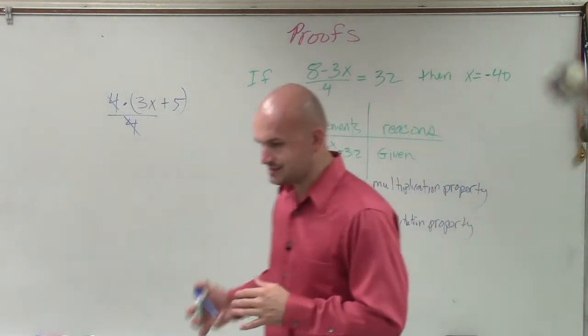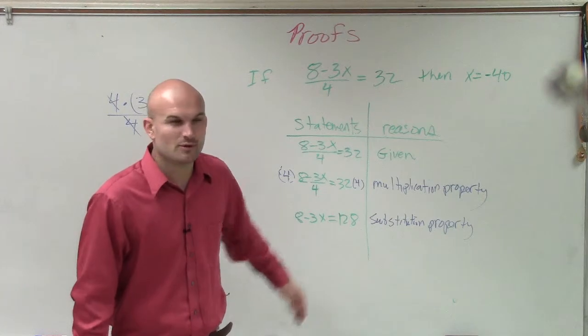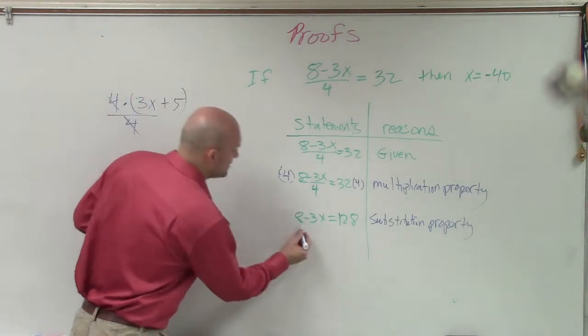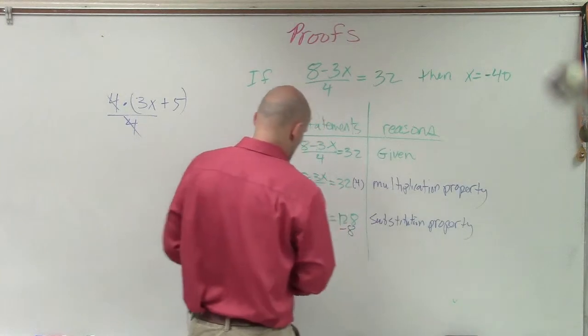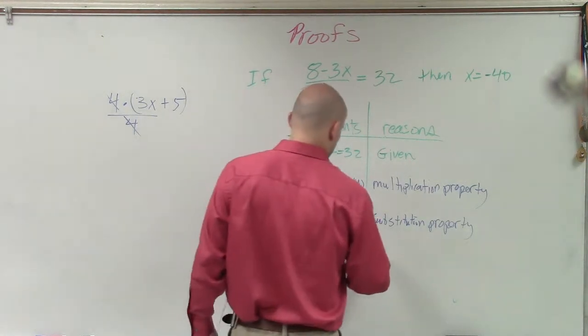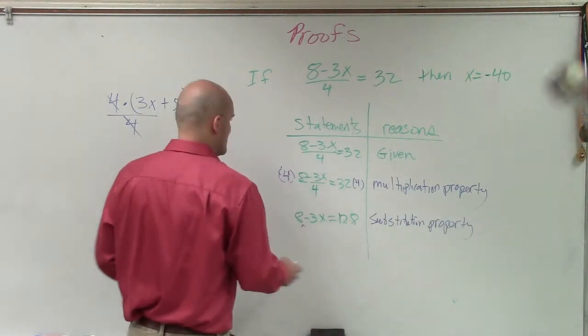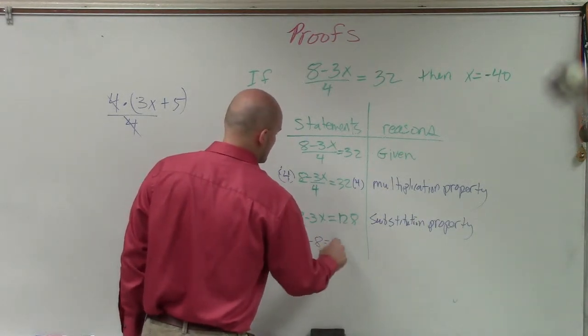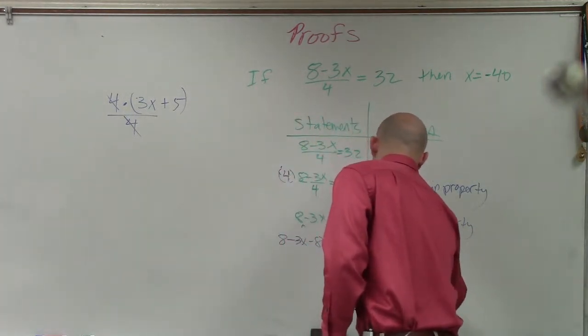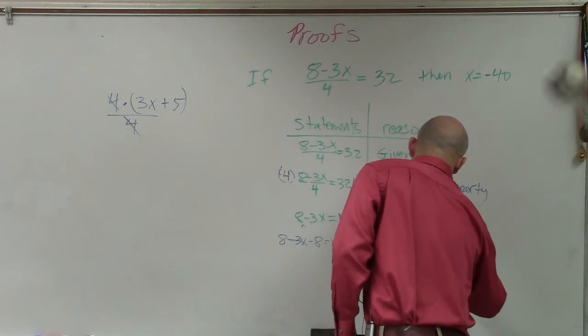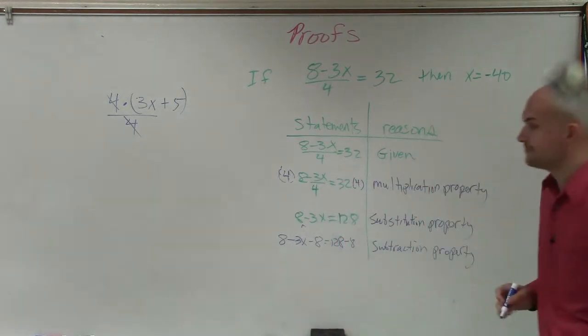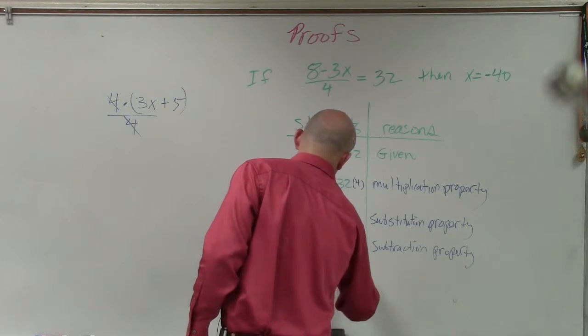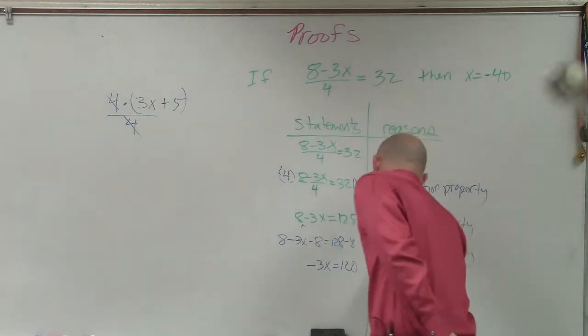So, Josh, do you know what I would do next to go ahead and solve for this? If I had this linear equation, two step equation, what would be my next step? Subtract 8 on both sides, right? Exactly. And we call that the subtraction property of equality. Let me write it in here. So therefore, now I have 8 minus 3x minus 8 equals 128 minus 8, which we call the subtraction property. OK? Well, now I can subtract 8 minus 8, so therefore, I'm left with negative 3x equals 120. And again, since I'm simplifying that, we call that substitution.